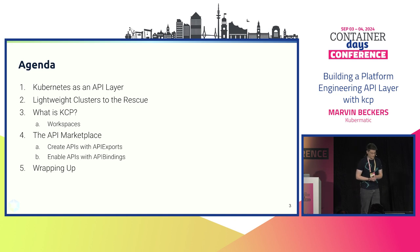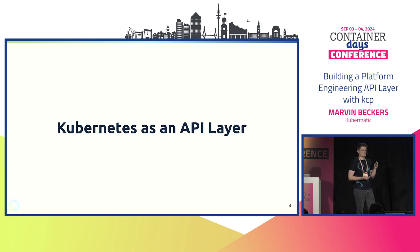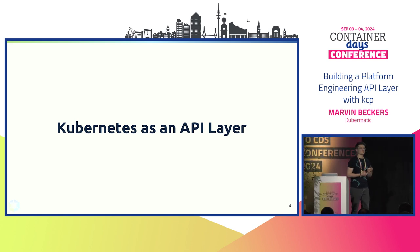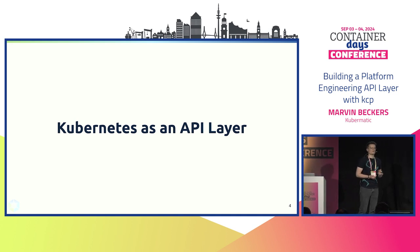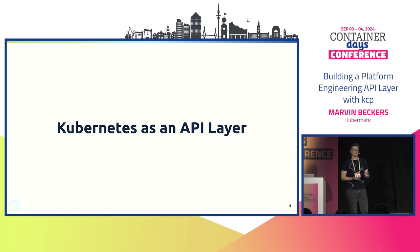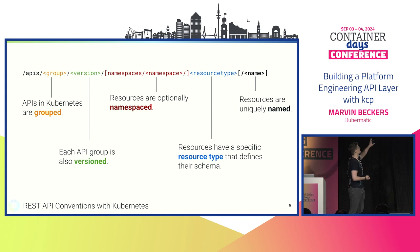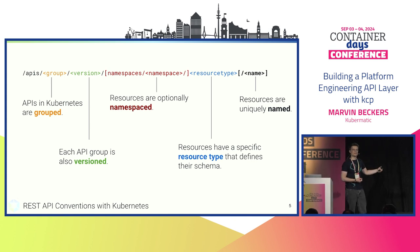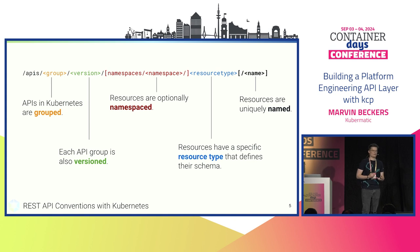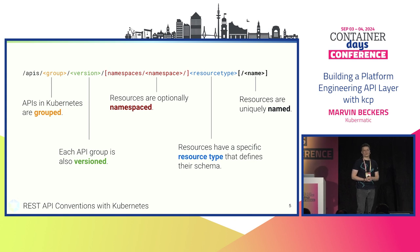Where does Kubernetes stand as an API layer? The Kubernetes API was primarily built to support container orchestration. But over the years, CRDs have basically allowed us to extend a very specific pattern of the Kubernetes API — the Kubernetes resource model. This is a technical breakdown of how a resource in Kubernetes looks, how an endpoint works with an HTTP REST pattern. It's a very expressive pattern that has served well in container orchestration.